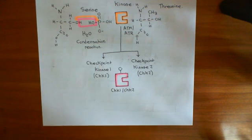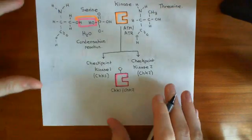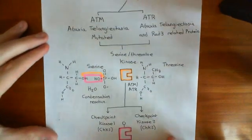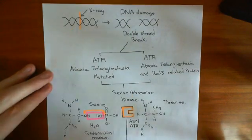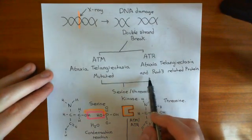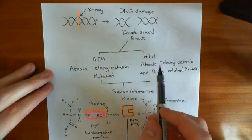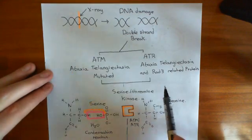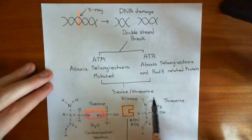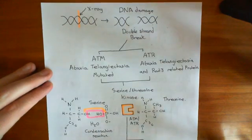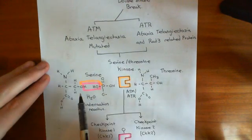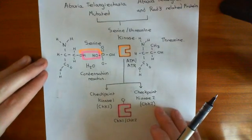So far what we've seen is that if you get DNA damage, what's going to happen is that these ataxia telangiectasia mutated proteins and this ataxia telangiectasia and RAD3-related protein, they are going to become active. And when they're active, they are serine-threonine kinases, which means that they add phosphate groups onto serine and threonine residues in proteins.